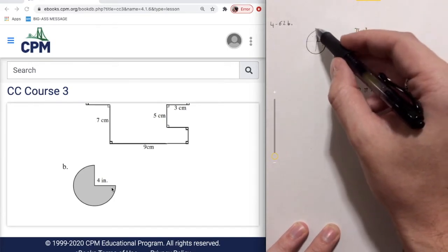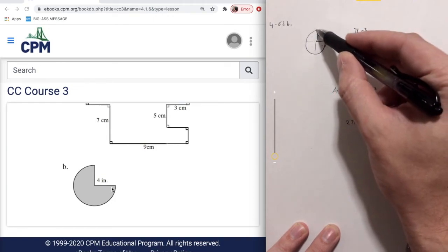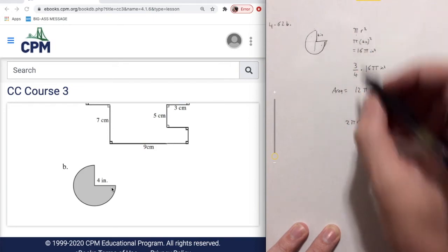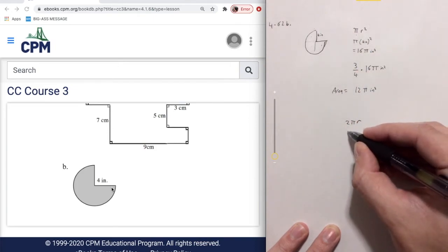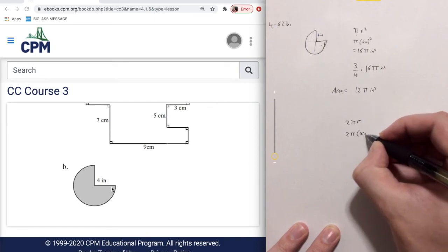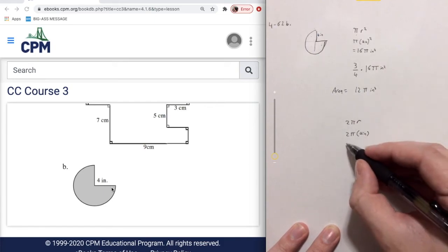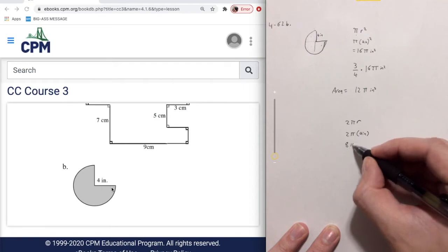If we were looking at the perimeter of the whole circle, walking all the way around the circle, not with this weird cut taken out of it, it would be 2 times pi times 4 inches, which is going to be 8 pi inches.